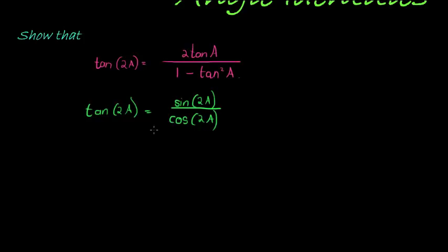Now we also know what the expressions are for these. We have that sine of 2A is 2 sine A cos A, and cos of 2A is cos squared A minus sine squared A. It doesn't matter which one you use actually.